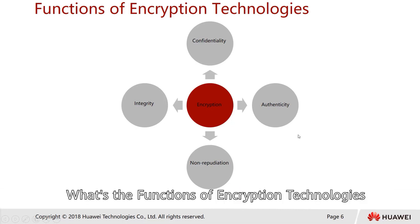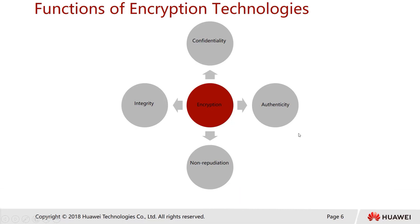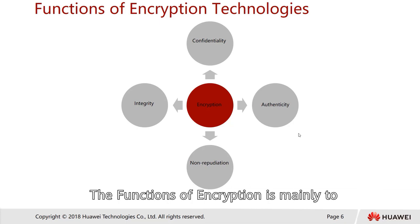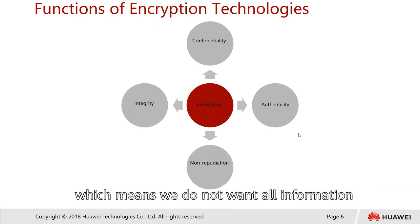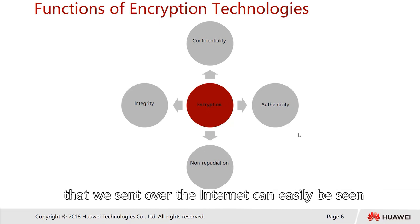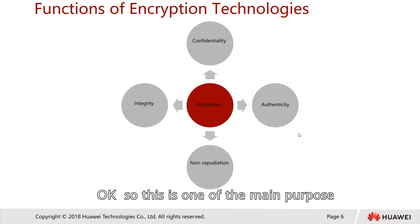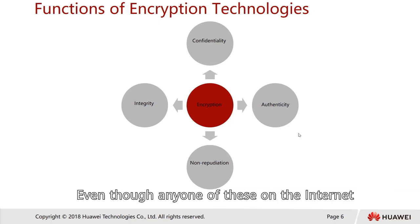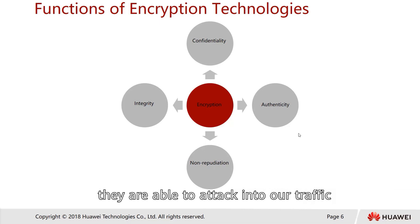What's the function of encryption technology? The function of encryption is mainly to provide confidentiality — we do not want our information, files, or passwords sent over the internet to be easily seen by anyone. So even though anyone on the internet is able to tap into our traffic, they cannot view the actual content.